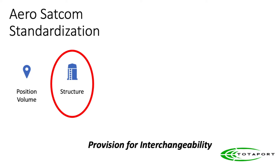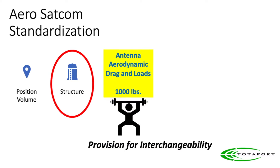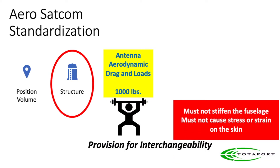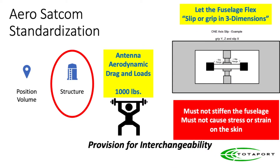Bolting antennas to the outside of airplanes introduces large loads — as much as 1,000 pounds on a single attachment. We have to be concerned about artificially stiffening the fuselage, which requires very sophisticated attachments to allow the fuselage to flex, especially in X and Y.